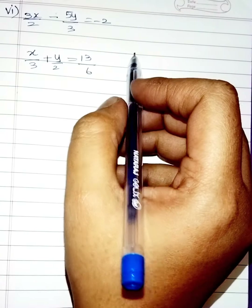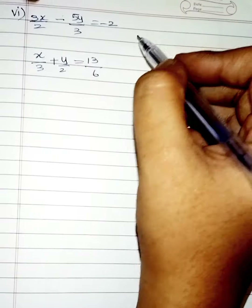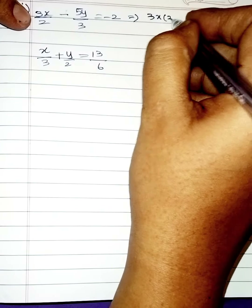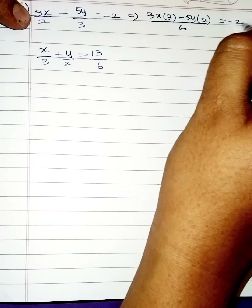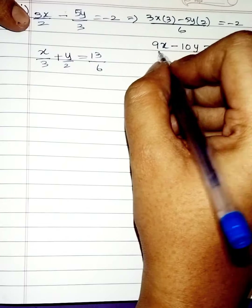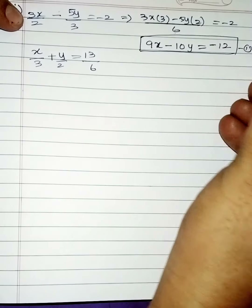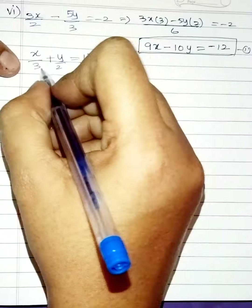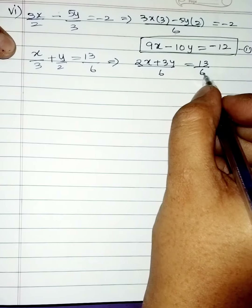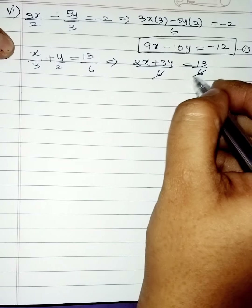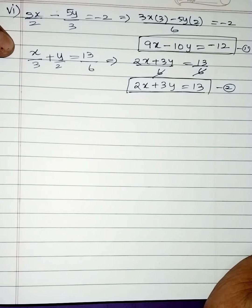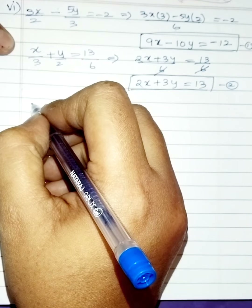Sixth subdivision is in fraction form. Simplify first: LCM of 2 and 3 is 6, giving (3x times 3 minus 5y times 2) divided by 6 equals minus 2. Cross-multiplying: 9x minus 10y equals minus 12. This is the first equation. For the second expression, LCM of 3 and 2 is 6: (2x plus 3y) divided by 6 equals 13/6. The 6's cancel, giving 2x plus 3y equals 13 as the second equation.